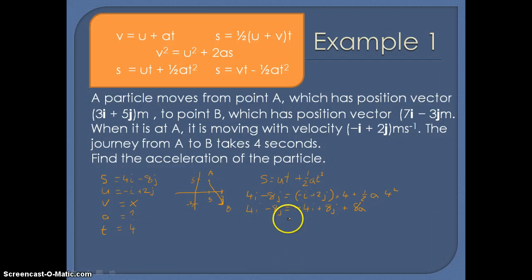So if we rearrange, 4i plus 4i would make 8i. And minus 8j minus 8j would be minus 16j equals 8A. So to calculate A, we need to divide through by 8, which would give us i minus 2j. So our acceleration would be i minus 2j meters per second squared.